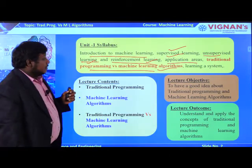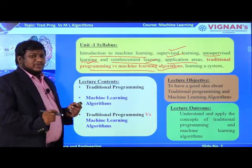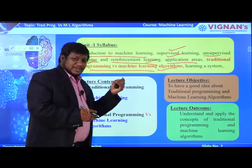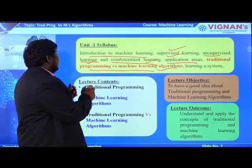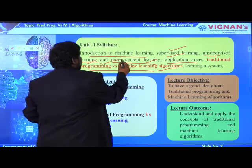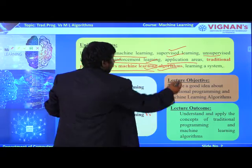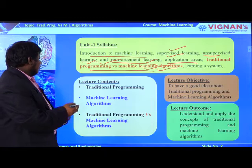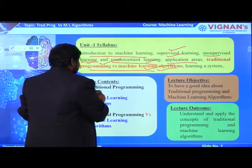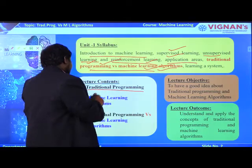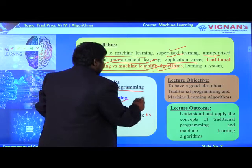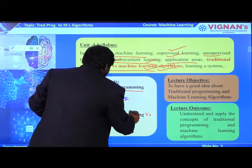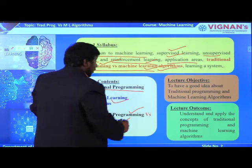Another topic we will touch on is learning a system — what is basic learning and how many types of learnings are there. In this lecture I am going to cover: what is traditional programming, what are machine learning algorithms, and what is the main difference between these traditional programming and machine learning algorithms.